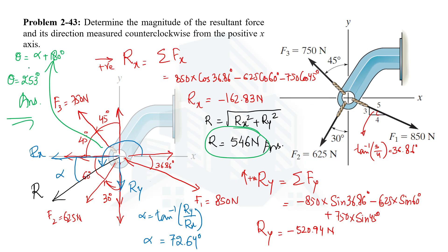So the magnitude of the resultant force is 546 N and its direction measured counterclockwise from the positive x-axis is 253 degrees. In this video we learned how to determine the magnitude and direction of a resultant force when a body is subjected to multiple forces, using the component method. Thank you for watching and I hope to see you in the next video.